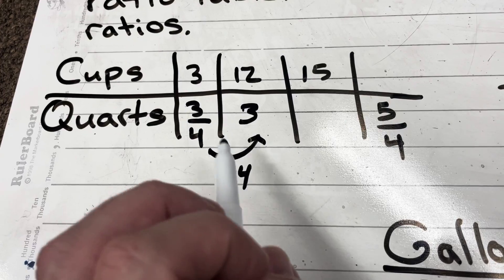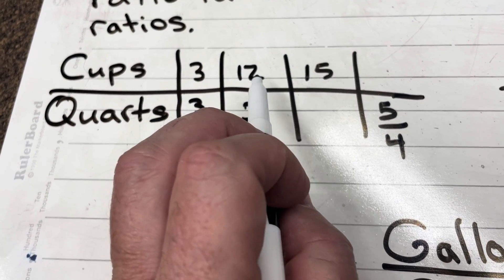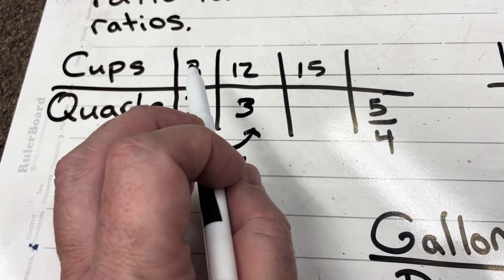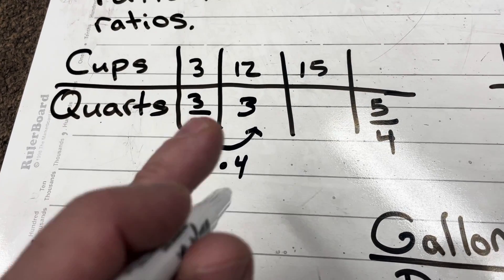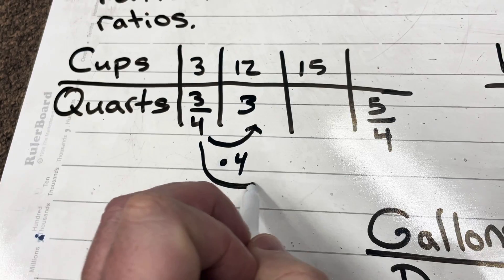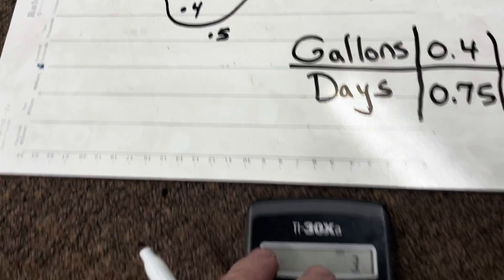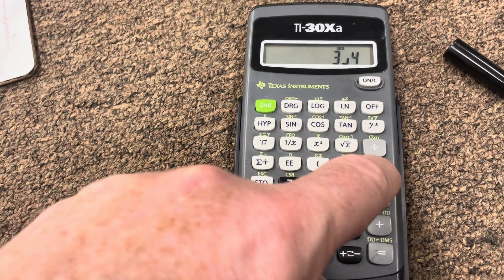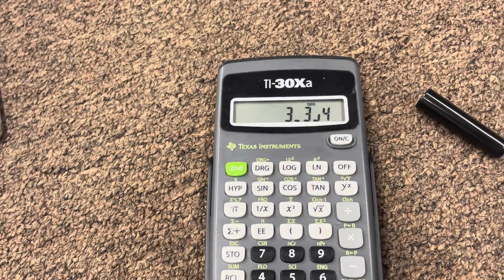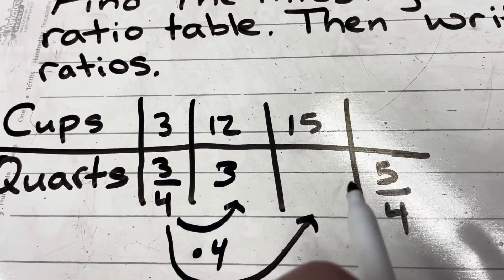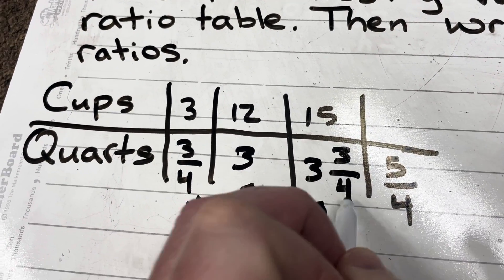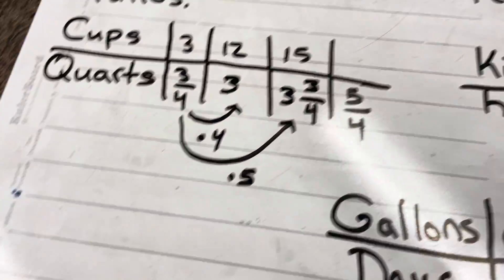Now I ask: what did I do to 3 to get 15? I did 3 times 5, which means I need to do 3/4 times 5. On the calculator: 3 over 4 times 5 equals 3 and 3/4. So when I have 15 cups I need 3 and 3/4 quarts.